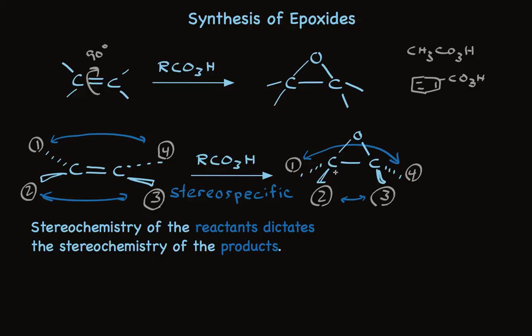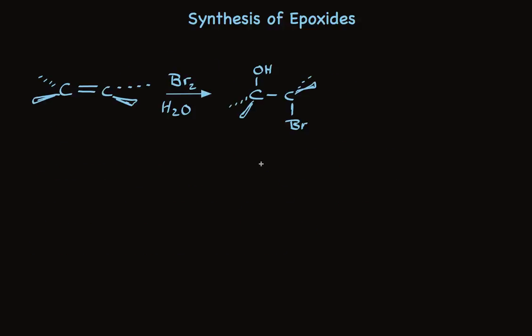Let's look at the other way for making epoxides. This is a two-step process. When bromine and water together are used to treat an alkene, we make a compound called a bromohydrin, as you've seen here. And when we treat bromohydrins with base, they make epoxides.